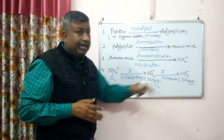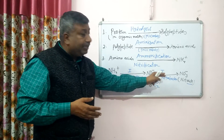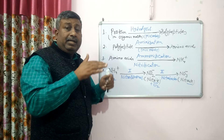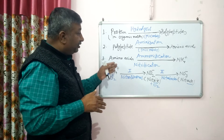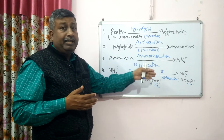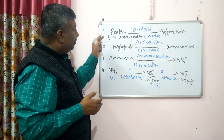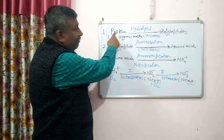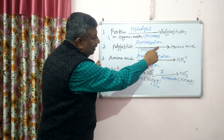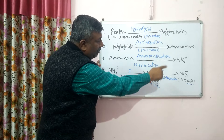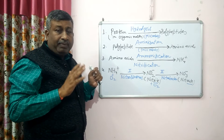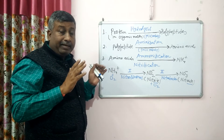However, nitrate ion is subjected to leaching. If nitrate is not absorbed by the plant, it can leach down through the soil. So if the nitrification process is fast, there are chances that nitrate may leach down. This is the process by which organic nitrogen (protein) is converted into ammonium ion and nitrate ion. Bacteria involvement is very important.